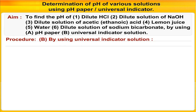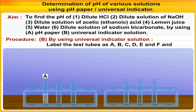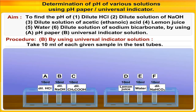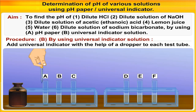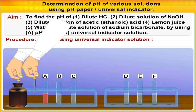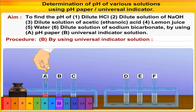Now let us see the values of pH using universal indicator. Take 6 clean and dry test tubes, label them as A, B, C, D, E, and F, and place them in order in a test tube stand. Take 10 ml of each given sample in the test tubes. Add 2 drops of BDH universal indicator — BDH stands for British Drug House — with the help of a dropper to each test tube. Observe carefully the color of the solution in each test tube and match it with the different color shades given on the universal indicator bottle. Note the pH given against the color which tallies with the developed color in the solution of each sample.